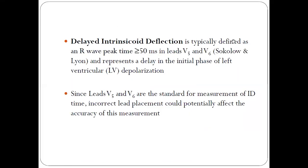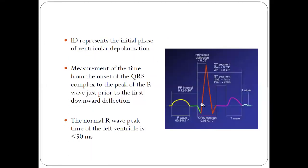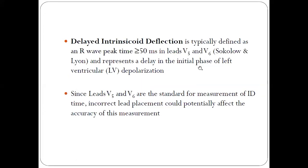Delayed intrinsicoid deflection is defined as an R wave peak time greater than 50 milliseconds in leads V5 and V6 specifically. This is defined by Sokolov and Lyon criteria and denotes that there is delay in the initial phase of left ventricular depolarization.